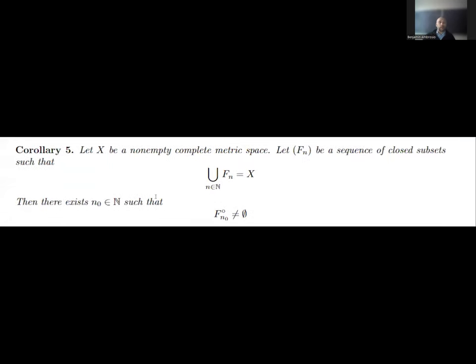With the Baire theorem in mind, we now deal with a corollary that will be helpful for the rest of the lecture. If X is a non-empty complete metric space and you have a sequence of closed subsets Fn whose union indexed by n equals X, then there exists some n₀ in N such that the interior of Fn₀ is non-empty — it has at least one point.